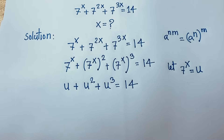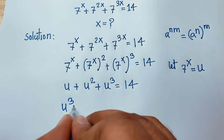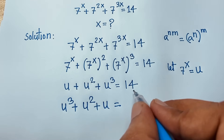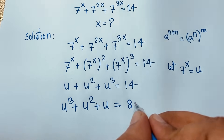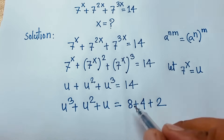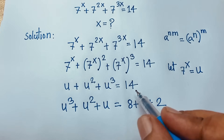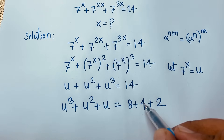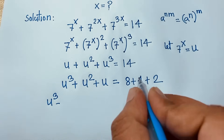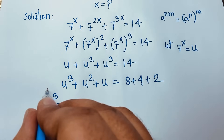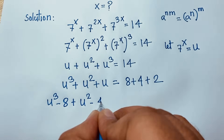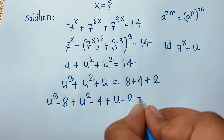We rearrange: u³ plus u² plus u equals 14. Now, 14 can be written as 8 plus 4 plus 2. Because we have u³, note that 8 is 2³. Moving terms across: u³ minus 8 plus u² minus 4 plus u minus 2 equals 0.